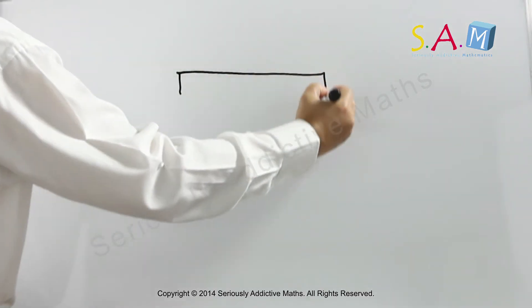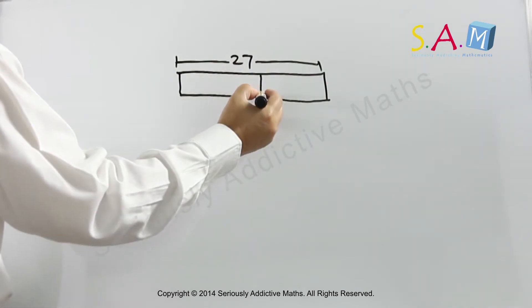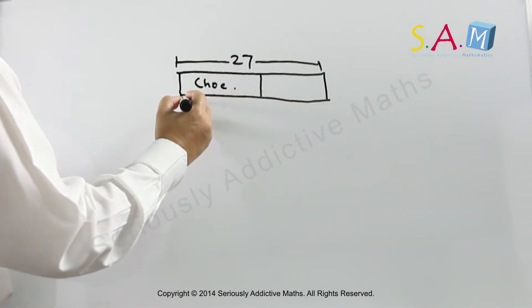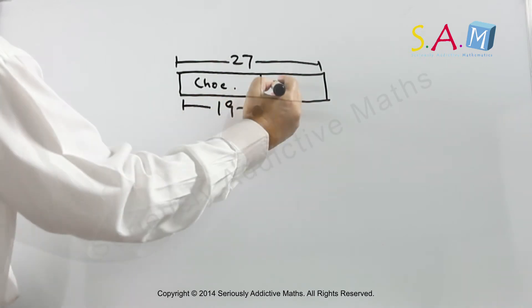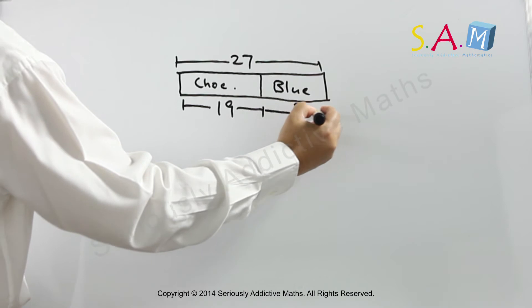Mother baked 27 muffins. So this is the whole. We're told that she baked 19 chocolate ones. So how many blueberry ones did she bake?